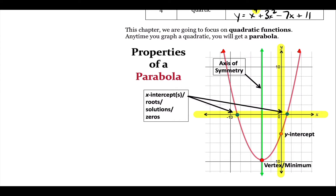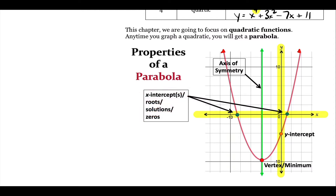The y-intercept is where the parabola crosses the y-axis — it's a dot, at (0, negative 2). The next part has a lot of names: sometimes they're called roots, sometimes x-intercepts, sometimes solutions, sometimes zeros. They're all the same thing — it just depends on the problem. That's why I put all names in your notes. These are the dots where the parabola crosses the x-axis.